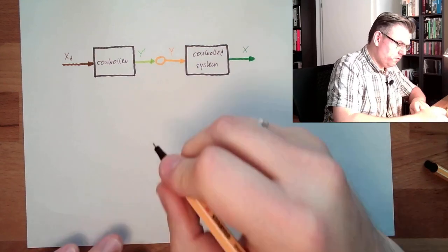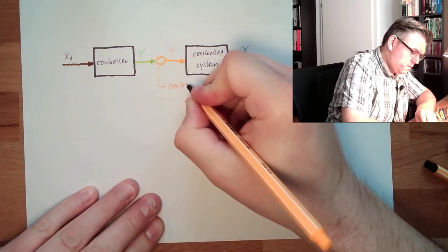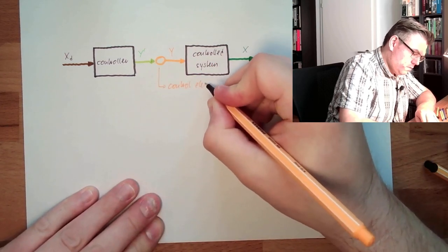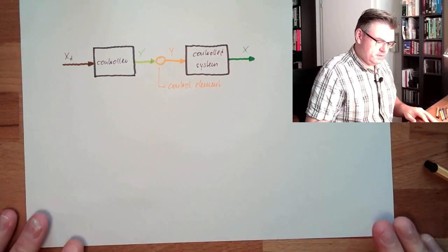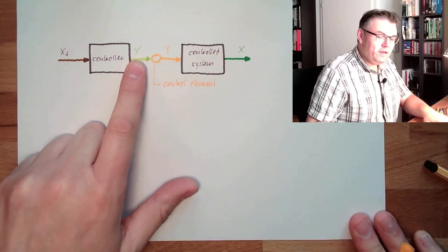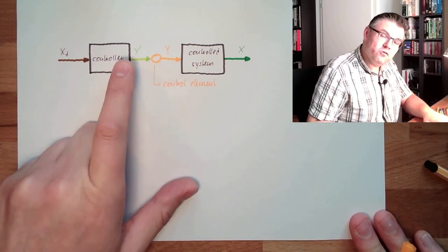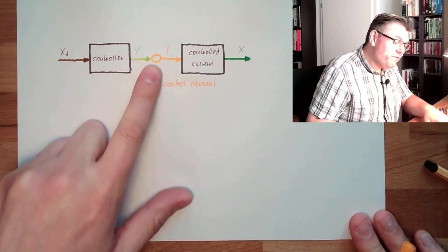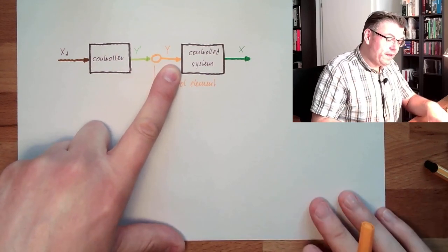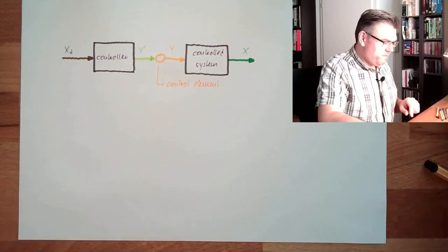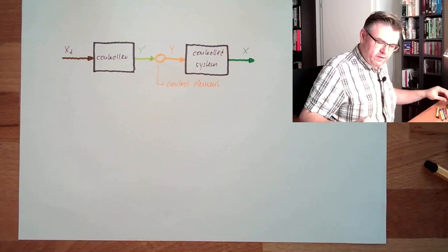This here is the control element. And the issue now is that there might be a difference between this y dash and this y - between the internal correcting variable and the really applied correcting variable. There might be a difference. I show you what I mean with the help of a little diagram.